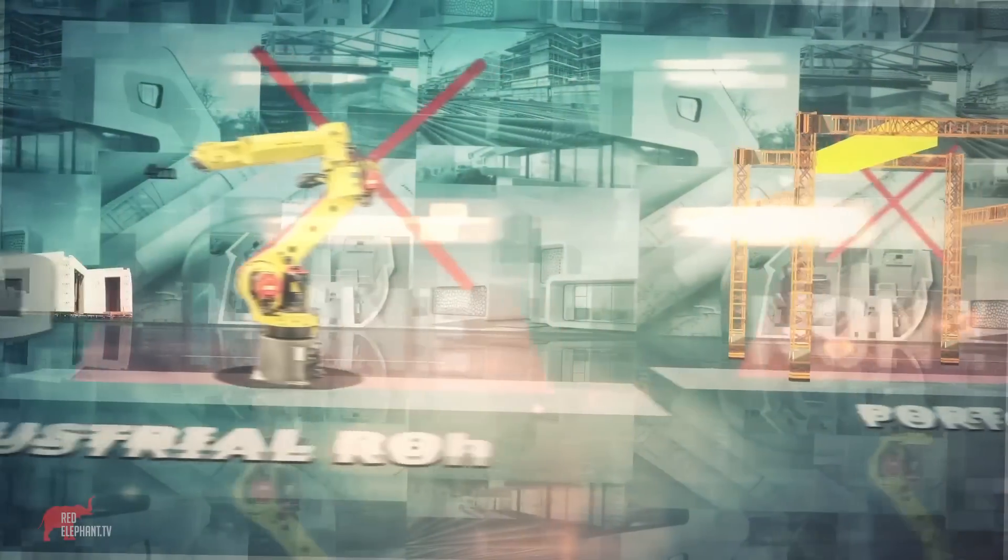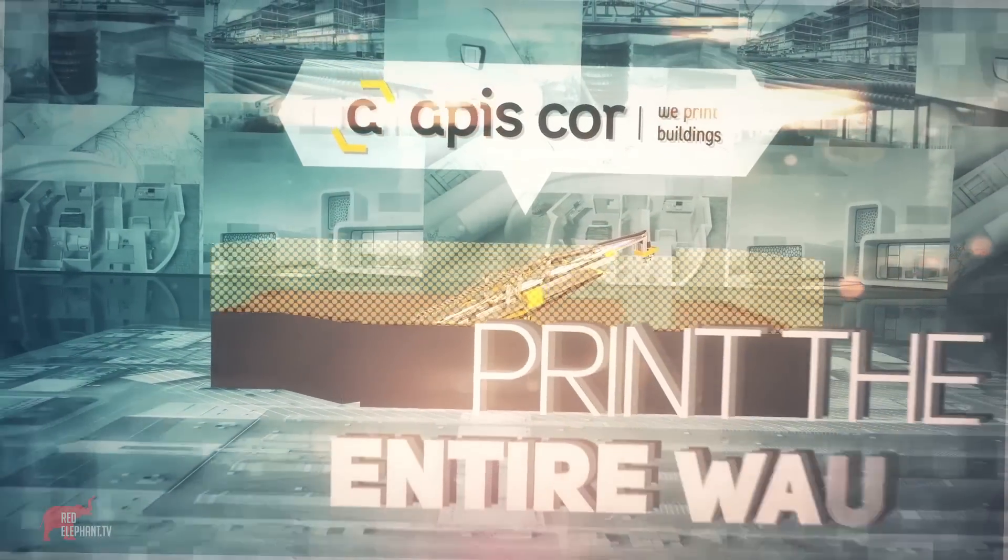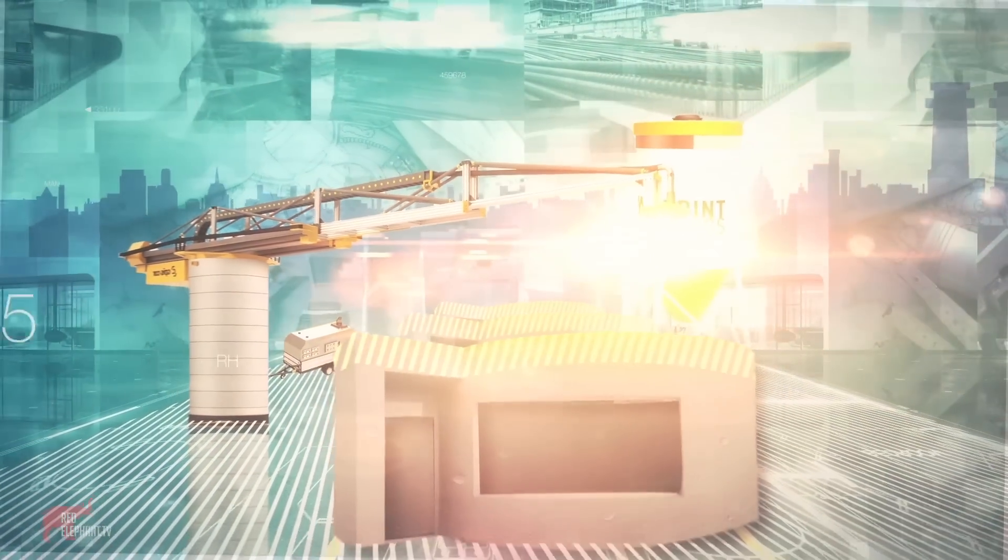Unlike its fellow printers at the moment, only the APIS Core printer is able to print the entire walls of a building directly on site, acting as a mobile factory for the production of wall structures.